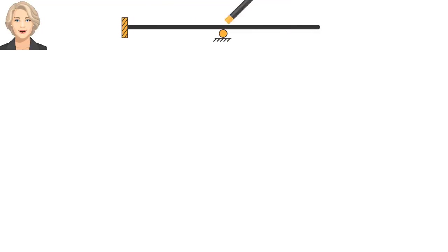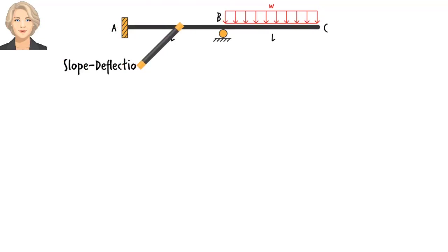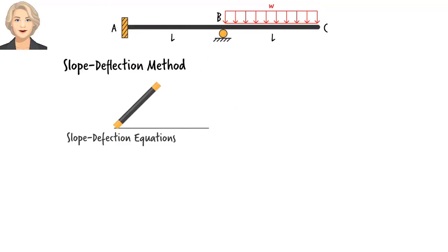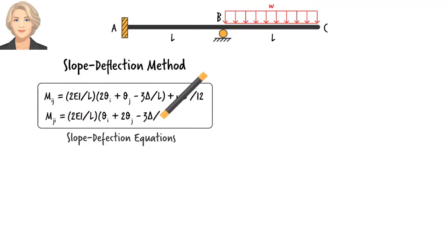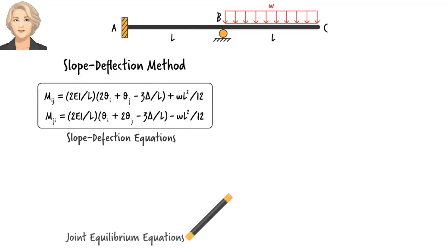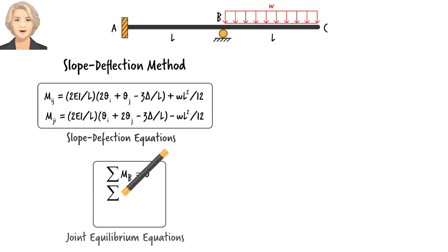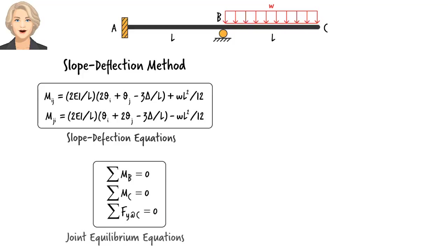Consider this particular continuous beam. If we were to analyze it using the slope-deflection method, first we would have written the slope-deflection equations for each member. Then we would have used the joint equilibrium equations to find the unknown rotations and displacements. In this lecture, we are going to more or less follow the same process, but we'll do it using matrices.